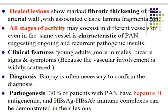This pattern of acute and healed lesions in the same vessel or in different vessels of the same patient suggests ongoing and recurrent pathogenic insults. The clinical features of polyarteritis nodosa occur in young adults, more in males, with bizarre signs and symptoms due to widely scattered vascular involvement — some patients present with eye complaints, some with skin, renal, or gastrointestinal manifestations.